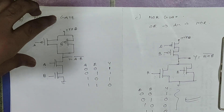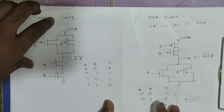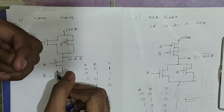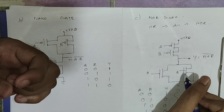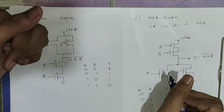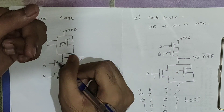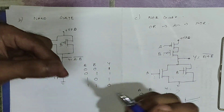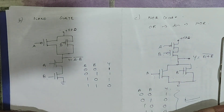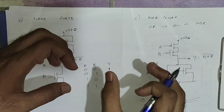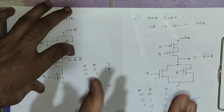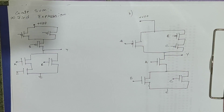To summarize: to get AND gate behavior we place two NMOS in series; for OR gate we place two NMOS in parallel. Taking output from the drain gives the complement — complement of AND gives NAND gate, complement of OR gives NOR gate. This rule will be useful while finding expressions in gate sums.